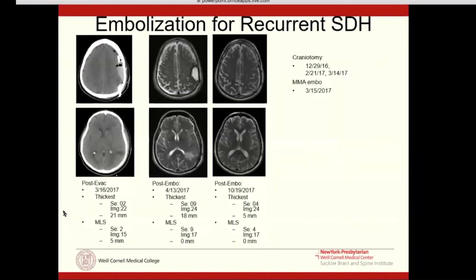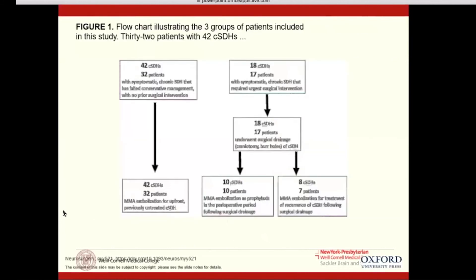This is a patient who presented with a three-time recurrent subdural hematoma — evacuated every time, recurrent every time — and finally after the third operation we did an embolization and it didn't come back. We studied three groups of patients in our initial series: patients receiving upfront treatment who had failed conservative therapy in lieu of surgery; those who had received surgery and had symptomatic recurrence; and those who had received surgery and were getting the embolization procedure prophylactically perioperatively to assess recurrence rates.